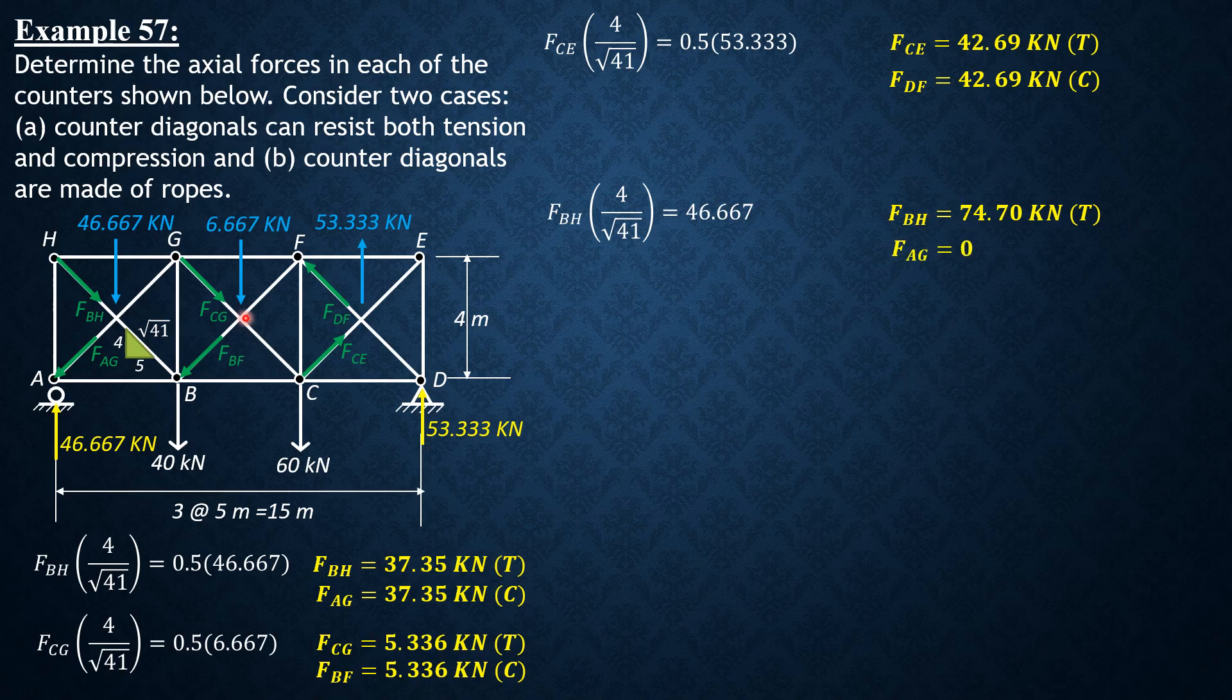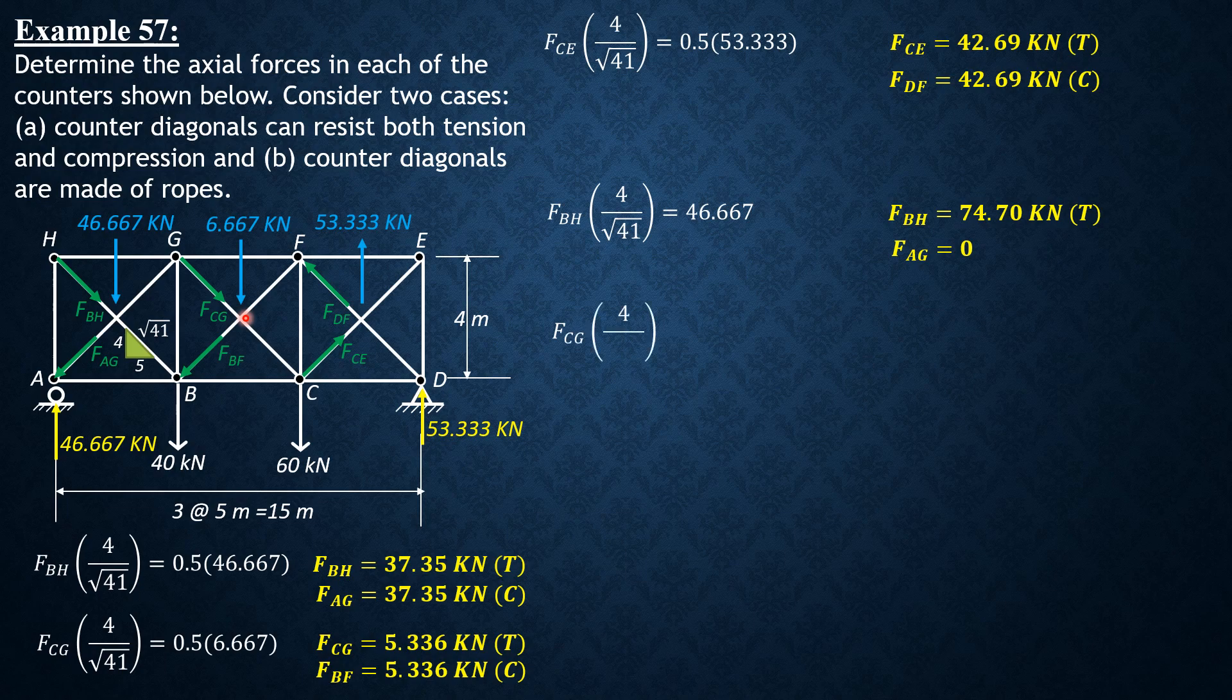Then FCG times 4 over square root of 41 is 6.667. So FCG is equal to double the first, so 10.67 kN tension, while FBF, which is in compression by assumption B, is zero because it is in compression.